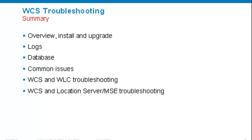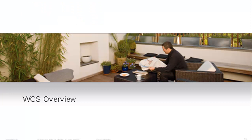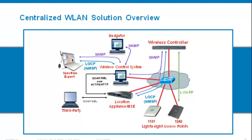Let's start with a WCS overview. Here you can see your wireless LAN solution overview and WCS is in the middle of this picture. You have different components in your environment: WCS, your wireless LAN controller, your access points, a location appliance, and in certain cases, spectrum expert, navigator, or some third-party applications that would talk to your location appliance.